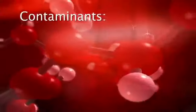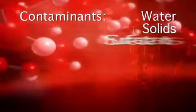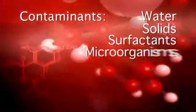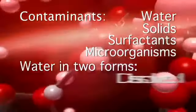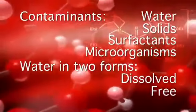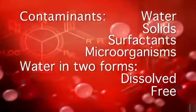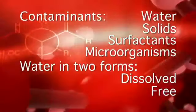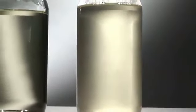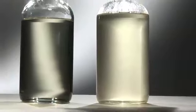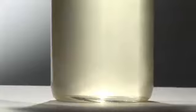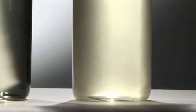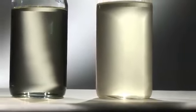Contaminants can appear in the fuel as water, solids, surfactants and microorganisms. Water can be found in two different forms: dissolved or free. Dissolved water poses no problem as long as it remains in solution with the fuel. Free water is usually in the form of very fine droplets suspended in the fuel. It can cause the fuel to appear hazy, which may come and go as the temperature changes. Free water can also collect at the bottom during shipping or storage — this water is known as water slugs.